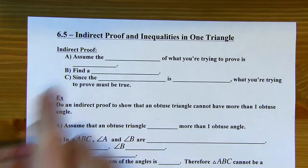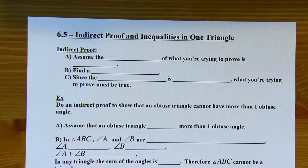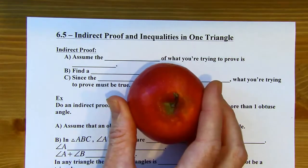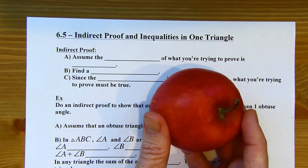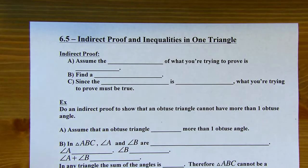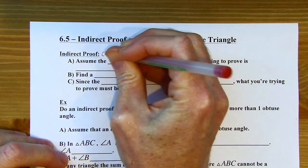I want to show you what an indirect proof is. Before I get to the technical stuff, I just want to describe it to you. Let's say that you're trying to prove that not all apples are green. One way I could do that is by pulling out a red apple and saying, see, not all apples are green. That's a really simplistic version of an indirect proof, which is sometimes called a proof by contradiction — it's the same thing.